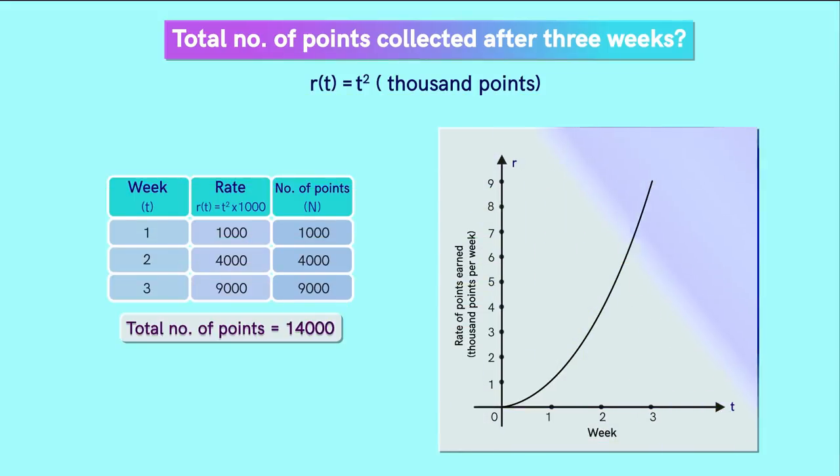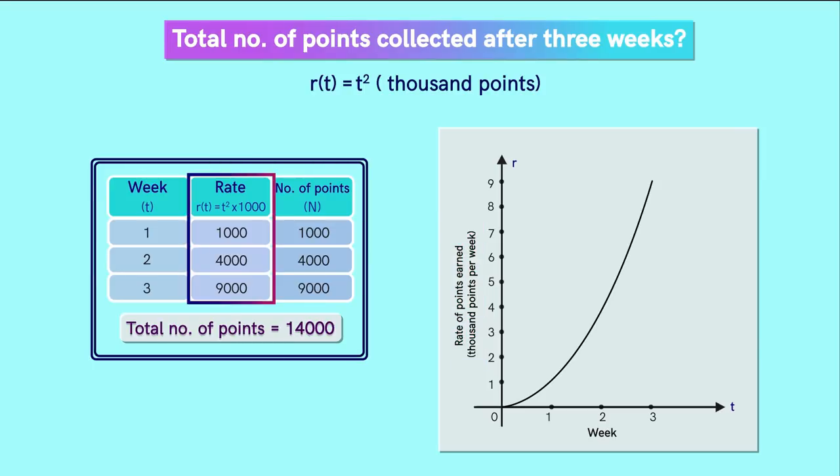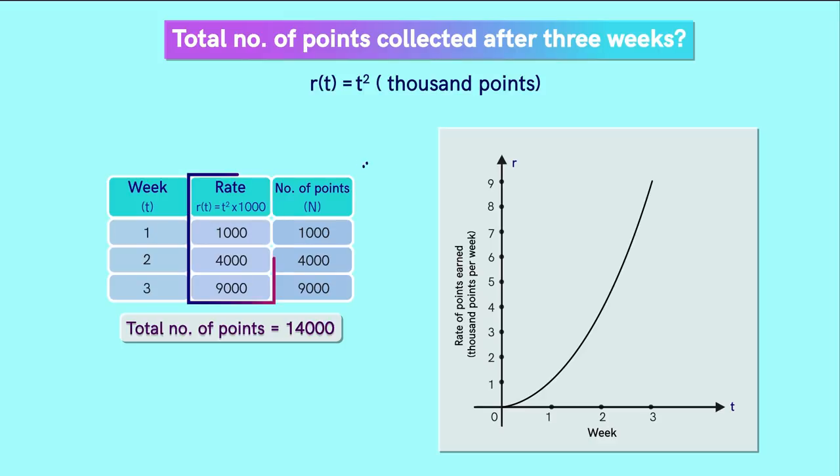Look at this graph. Here, we have the number of weeks on the x-axis and the rate of earning points on the y-axis. This calculation implies that the rate is constant during each week. So it can be represented by the horizontal lines like this. Now notice one interesting thing. Look at these rectangles.